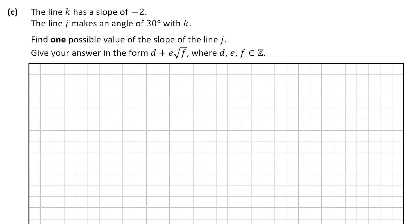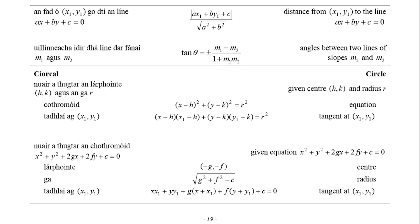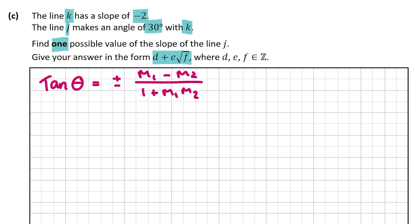Now let's get started on question C. We're told that line K has a slope of -2 and that line J makes an angle of 30 degrees with K. We know straight away we're going to use the formula for the angle between two lines given the slopes. We're asked to find one possible value of the slope of line J, and give our answer in the form D + E√F where D, E, and F are integers. On page 19 of the log tables you'll find the formula: tan θ = ±(M1 - M2) / (1 + M1·M2).